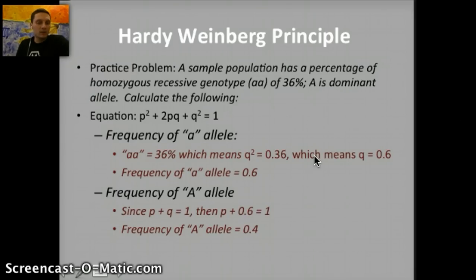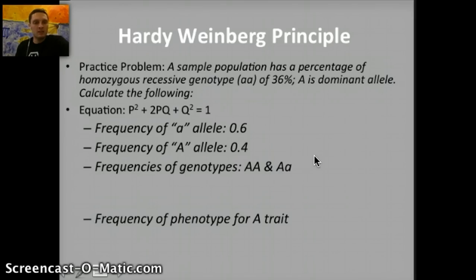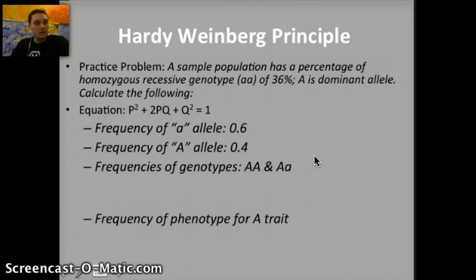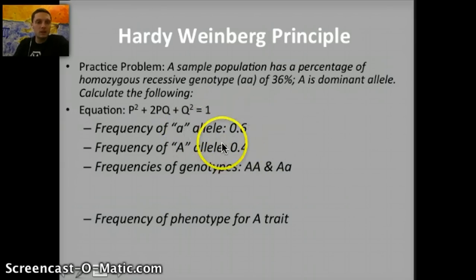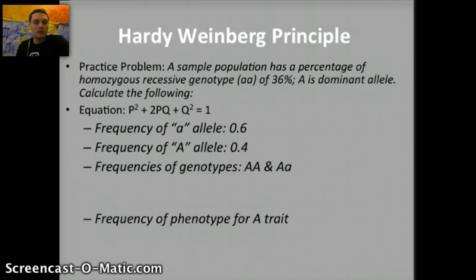We've now calculated both the dominant and recessive allele frequencies in the population. The second portion involves calculating the genotype frequencies of homozygous dominant and heterozygous, and the phenotype frequency for the dominant trait. Pause the video and work out these two portions using the values we just calculated: 0.6 for the recessive allele and 0.4 for the dominant allele.